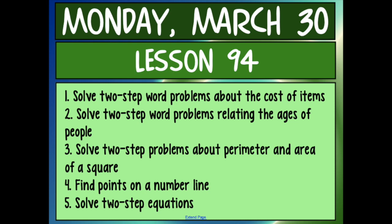Alright guys, today we are going to be going over lesson 94. There's a lot in lesson 94 that we're going to be practicing today. The first thing we're going to be solving is how to solve two-step word problems about the cost of items, how to solve two-step word problems relating to the ages of people, how to solve two-step word problems about perimeter and area of a square, how to find points on a number line, and how to solve two-step equations that use variables like x and y. Get out your whiteboard or a piece of paper so that you can follow along with me as we solve these problems.